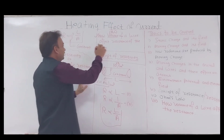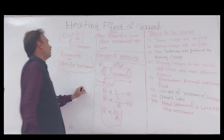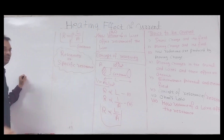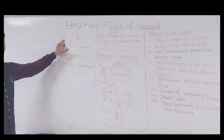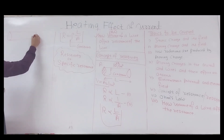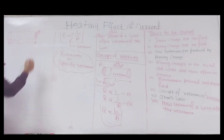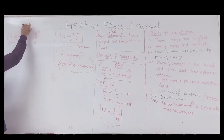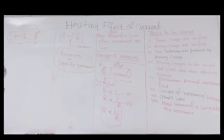Now let's look at how the volume of a wire affects its resistance with a worked example. Consider a wire of length L and cross-sectional area A. Its resistance is R = ρL/A and its volume is V = A × L. If we double the length of this wire, what is the new resistance R'?